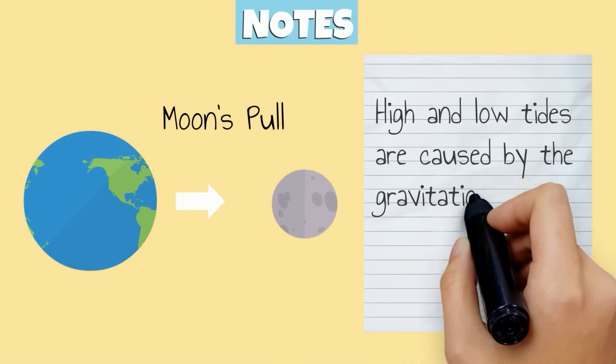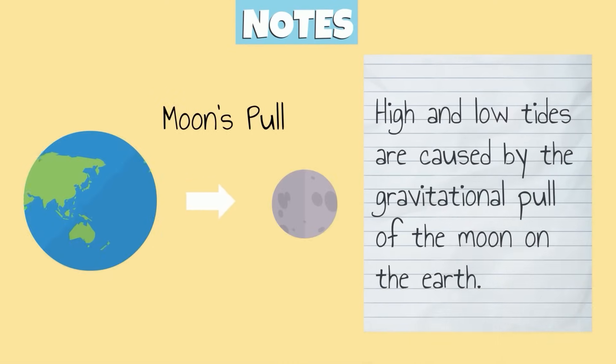Let's review what we just learned. High and low tides are caused by the gravitational pull of the moon on the Earth.